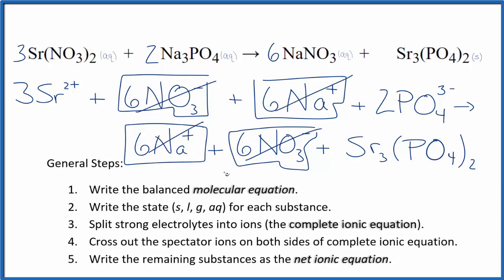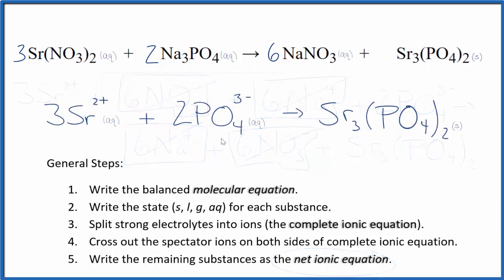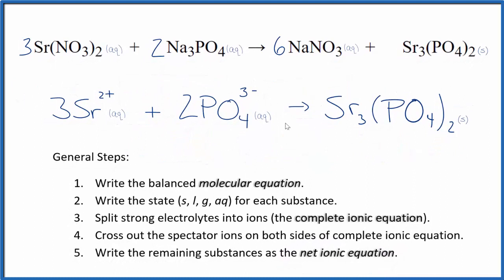But everything else is unique. That makes this the net ionic equation for strontium nitrate plus sodium phosphate. I'll clean this up and write the states. We'll have our net ionic equation.